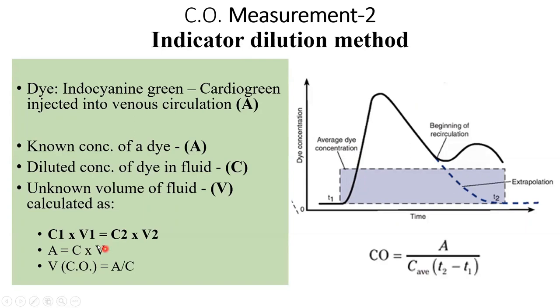This will reflect the cardiac output. Solving for V, we get V = A/C. The known amount of dye divided by the average diluted amount gives you the cardiac output.